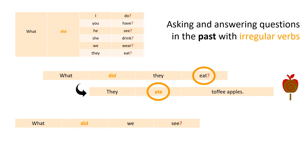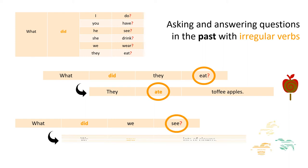Another example: what did we see? Did is in the past, so see is not in the past for the question. But in the answer, we have to have it in the past. We saw lots of clowns. Saw is in the past.